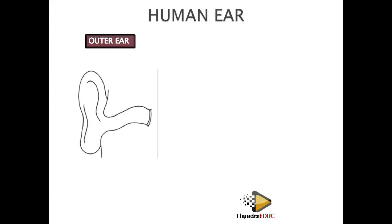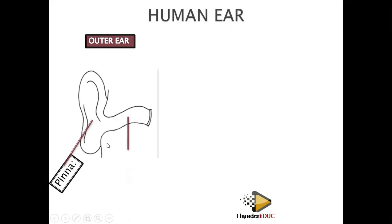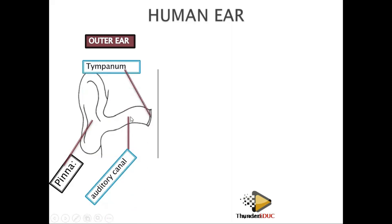The ear is divided into three parts. The outer ear consists of the pinna — the fleshy flappy part you see outside. The pinna is connected to the auditory canal, and then there is the tympanic membrane. In marking, we call it the tympanic membrane, not the eardrum. The pinna collects sounds and sends them to the auditory canal, which brings the sound to the tympanic membrane.